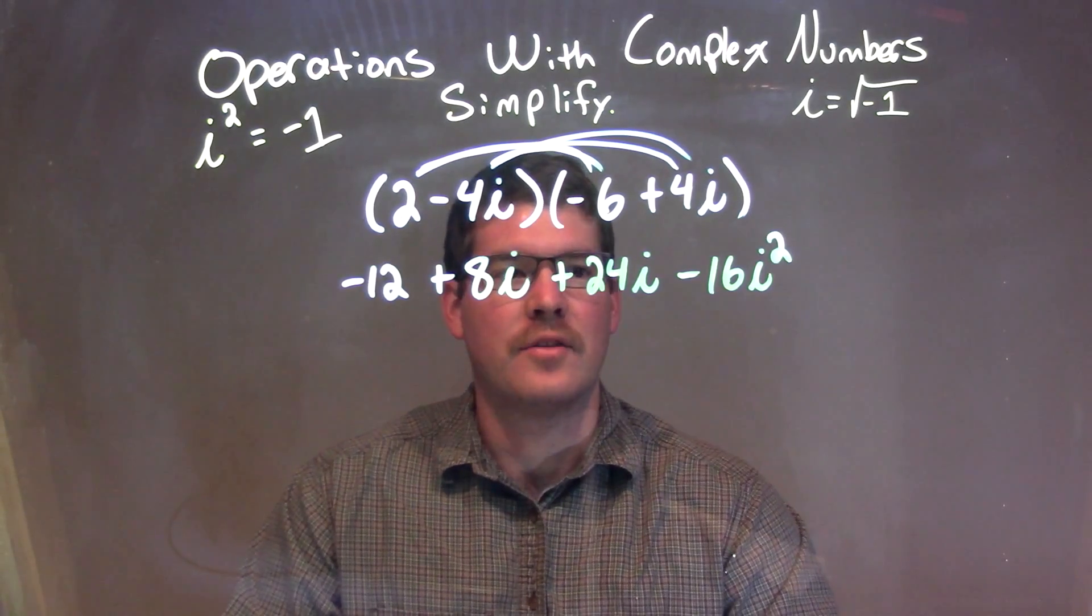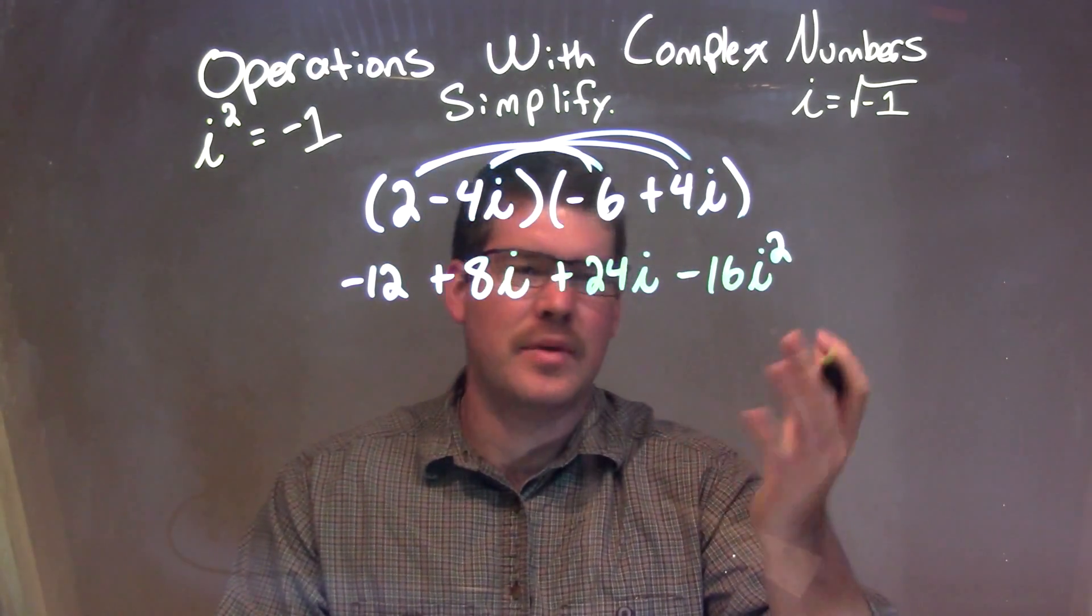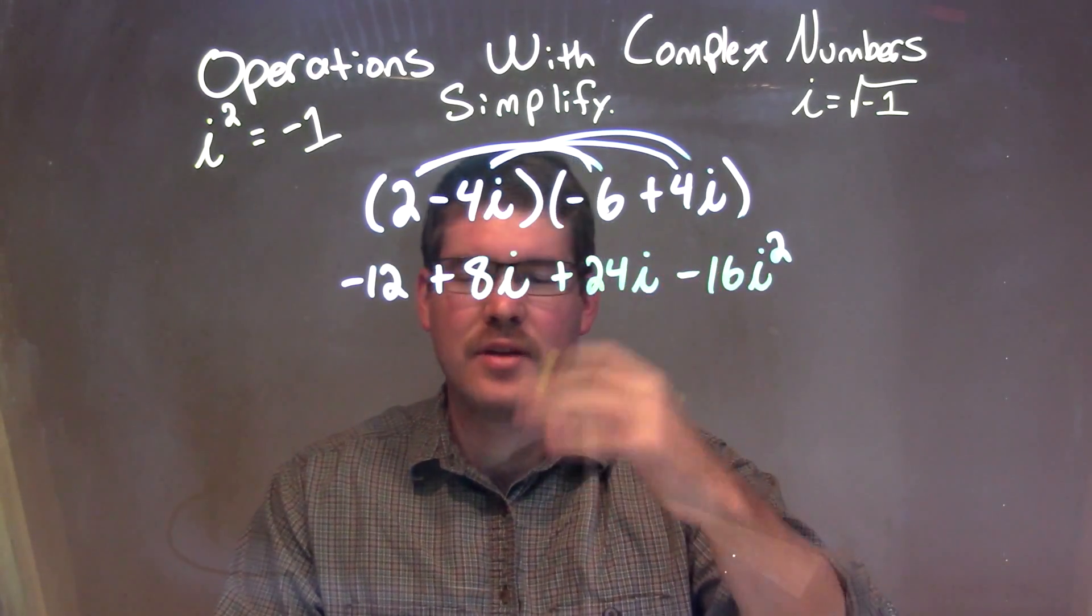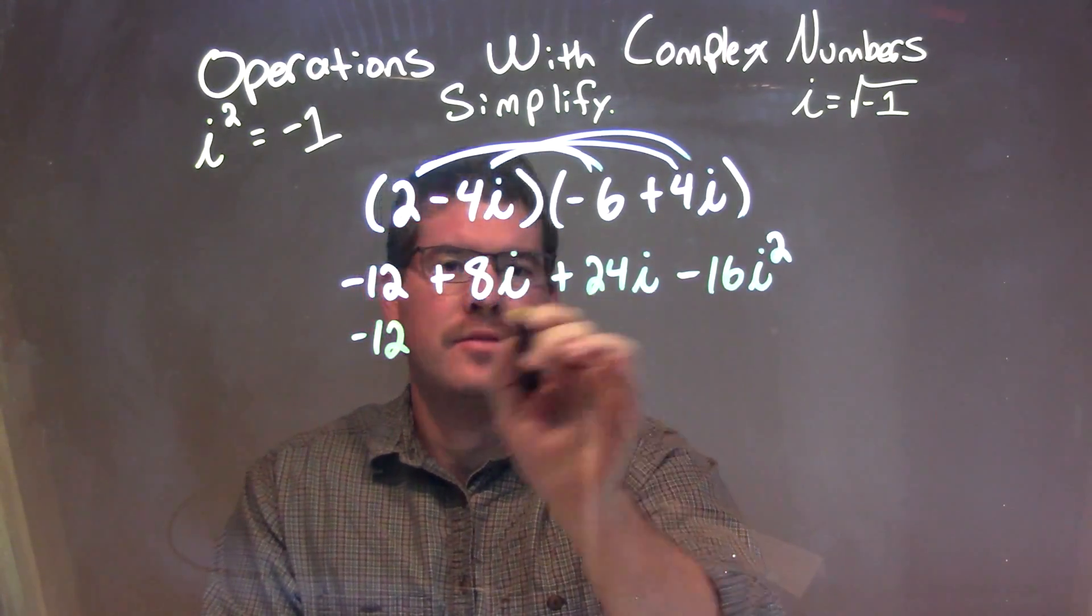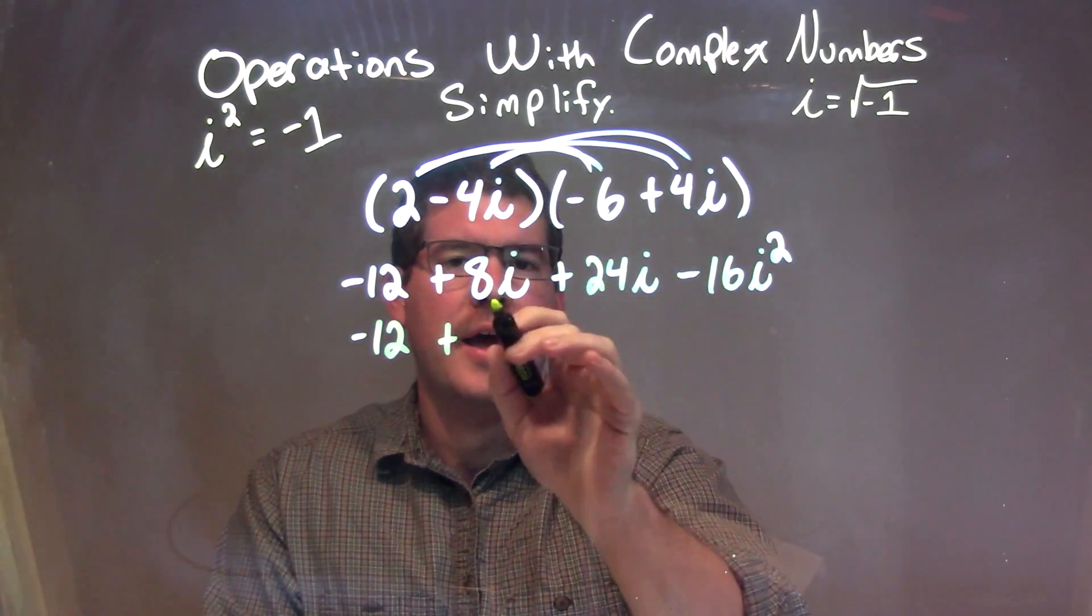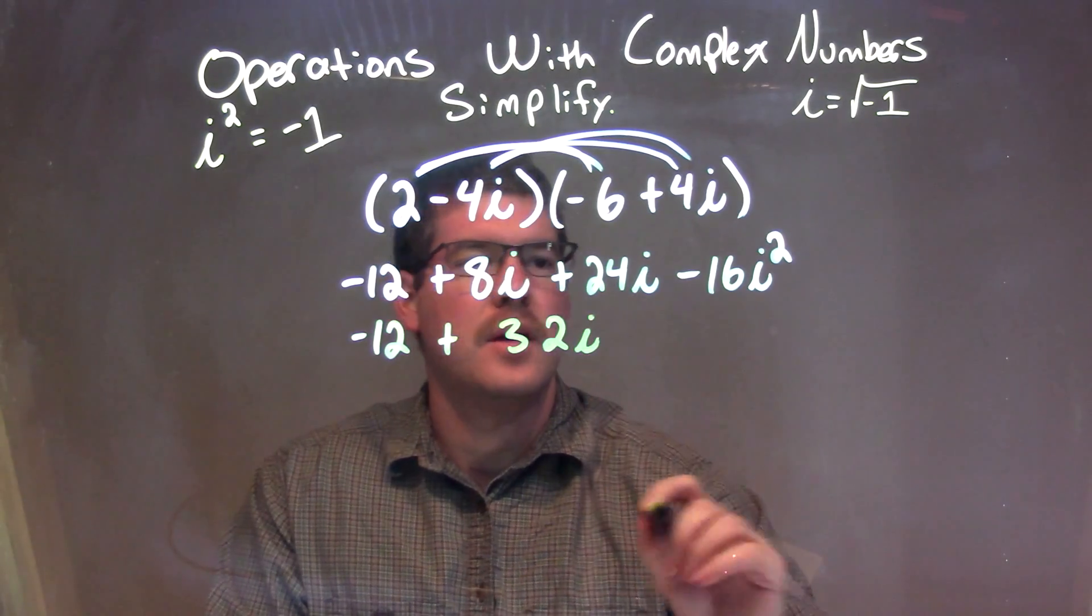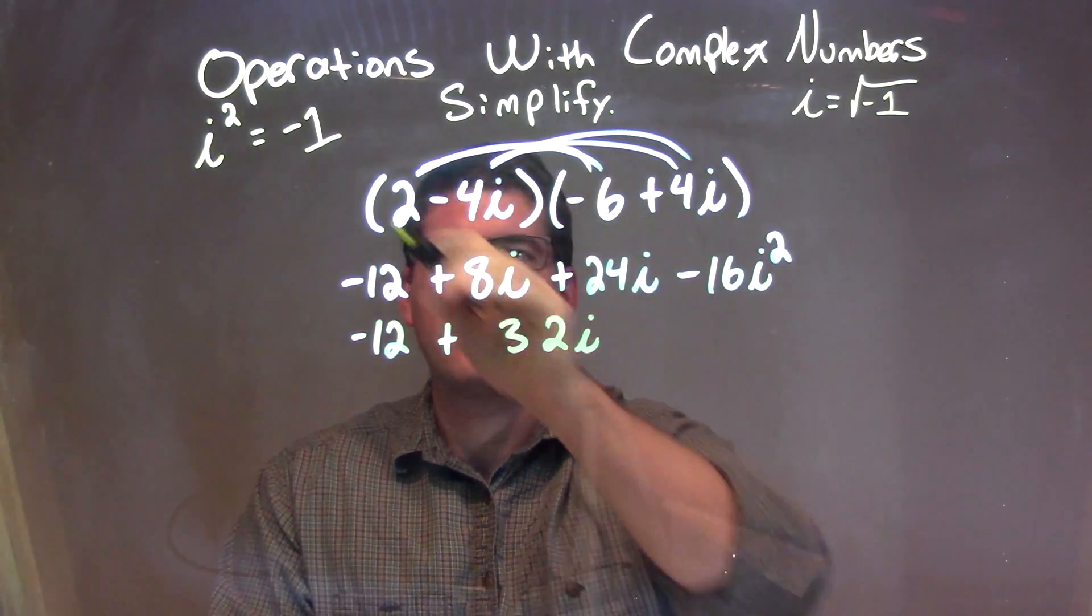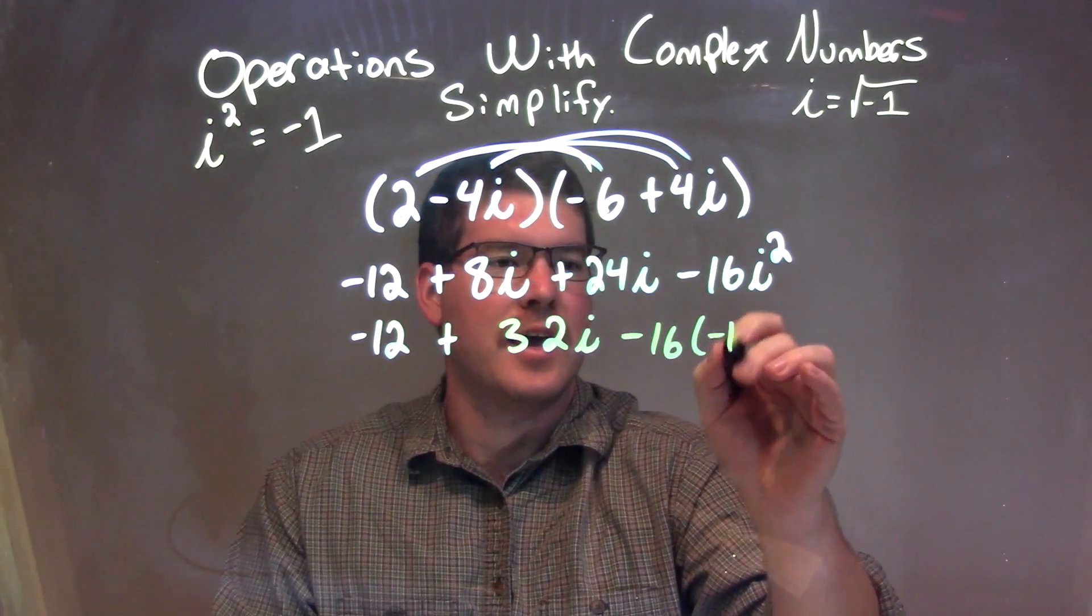Now we need to simplify this. This is where it gets a little different than i being like a variable, where it's a complex number, an imaginary number. Negative 12 just comes down, but we can combine these two. 8i and 24i is 32i. But then, here's the tricky part: i squared becomes a negative 1, so we have negative 16 times negative 1.